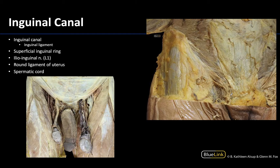Let's move to the inguinal canal region. As mentioned at the beginning, this is a traditionally complex region, and there are a lot of structures we are not going to have you identify — we are really only picking up on the more prominent, easier-to-identify structures. The inguinal canal extends from the deep inguinal ring, which as the name suggests is deep and not visible from these more superficial dissections, to the superficial inguinal ring, which is visible on this dissection right here — that opening is the superficial inguinal ring.